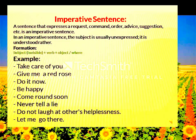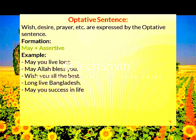Next is the optative sentence. An optative sentence expresses our emotion, wish, or prayer. To form an optative sentence, we first use 'may' before starting the sentence. Examples: 'May you live long.' 'May our president live long.' 'May you be successful in life.' 'May you prosper in life.' 'May you be happy.'